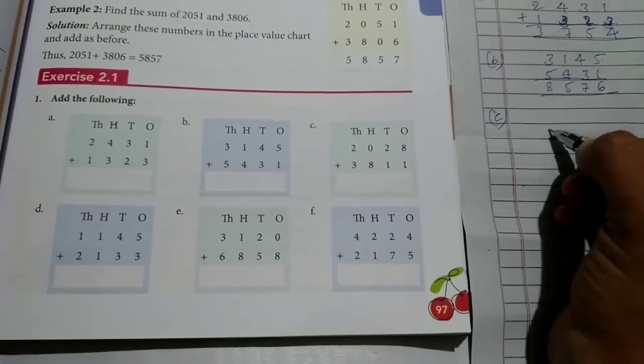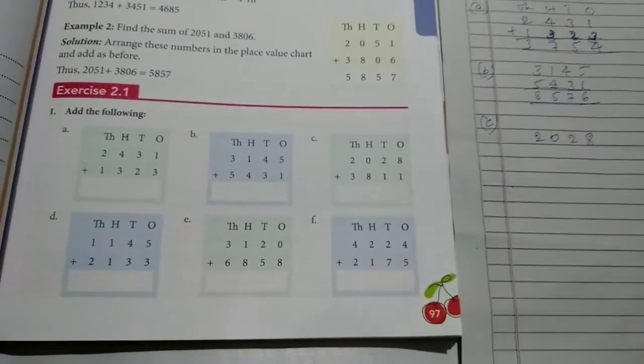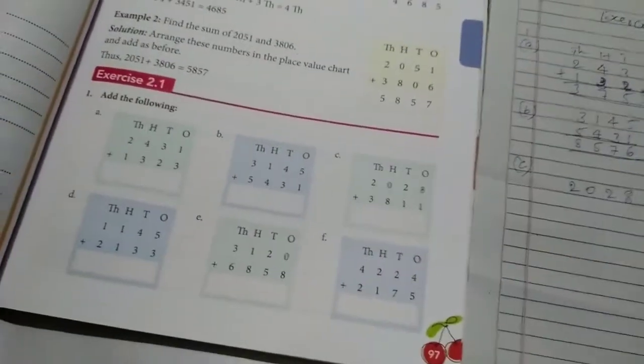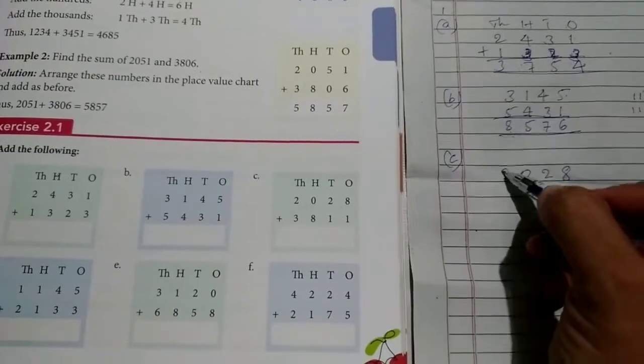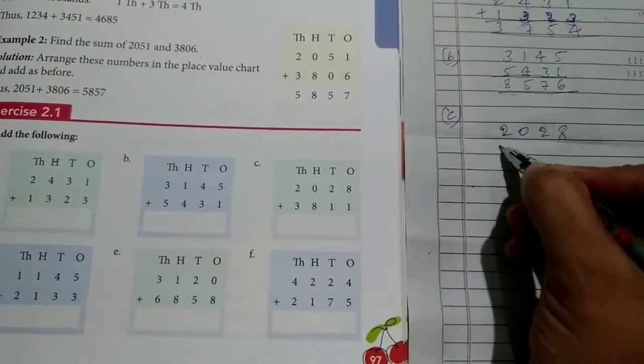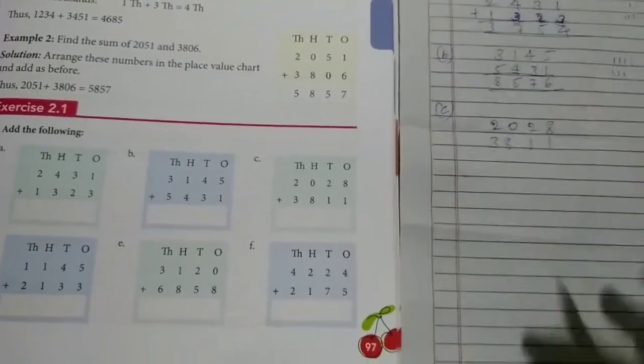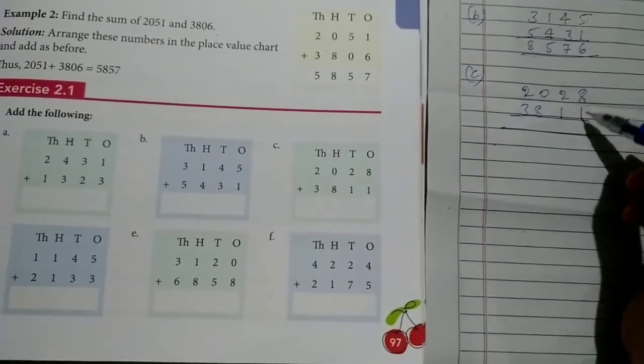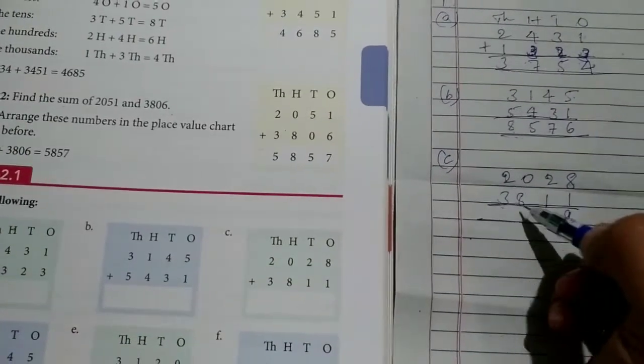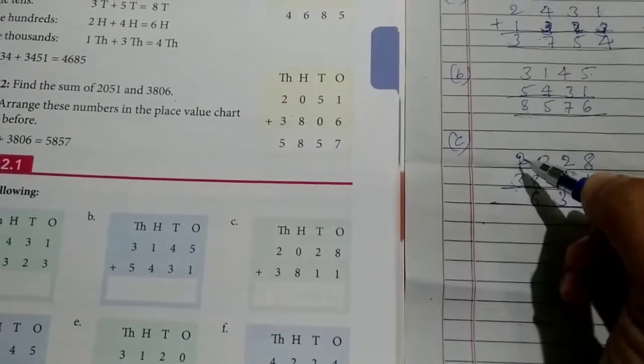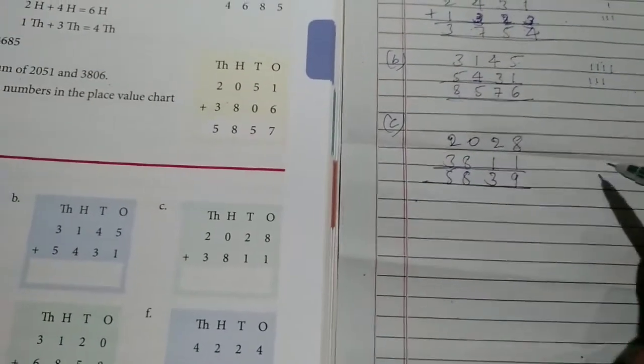Then C. 2,028 plus 3,811. So let us add this. 8 plus 1 is 9. 2 plus 1 is 3. 0 plus 8 is 8. Next 2 plus 3 is 5. So you have to add it properly. Add slowly by using the lines. If you can't add properly, put the lines. Then you add it slowly.